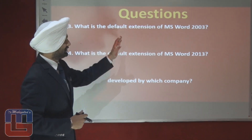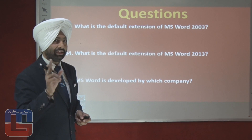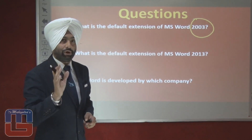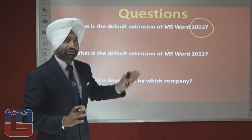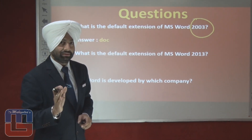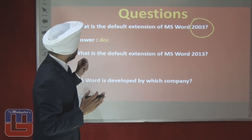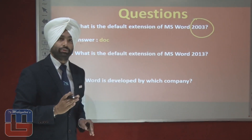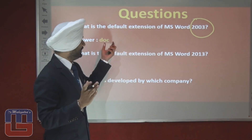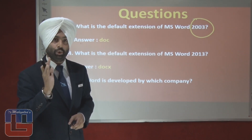What is the default extension of MS Word 2003? Emphasize the version number — 2003. The default extension of Word 2003 is DOC. What is the default extension of MS Word 2013? Just add an X — the default extension of Word 2013 is DOCX.